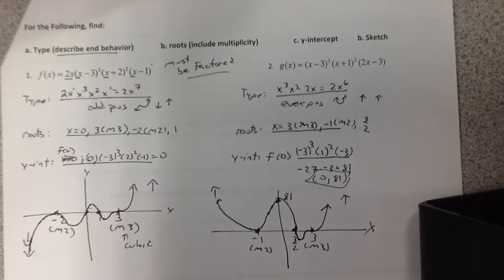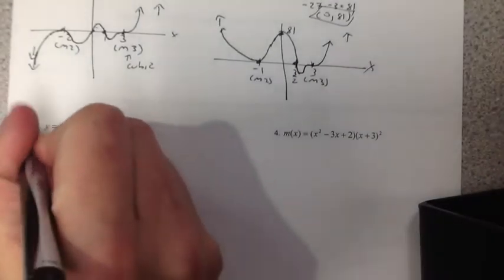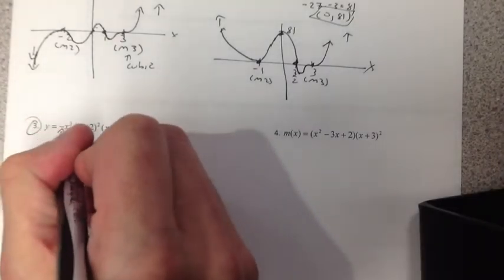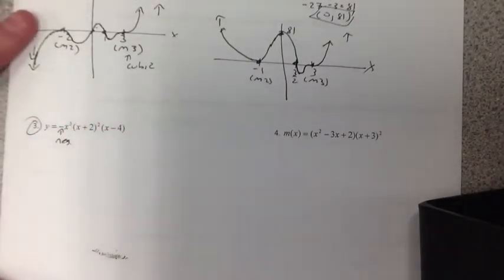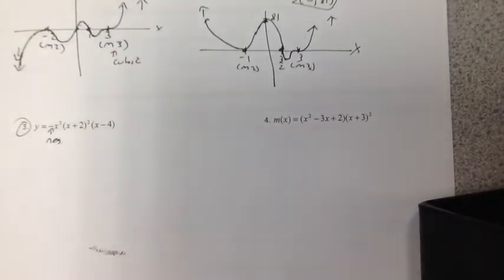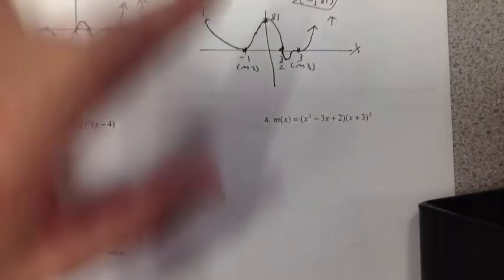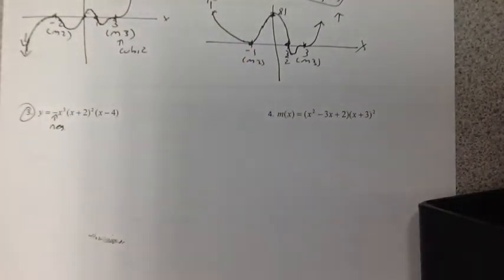Easy breezy. All right. I would like you to try number 3 at home tonight. But be careful. This is negative. It will affect our graph. Because I want to get to a problem like number 4 where we have to factor. Now, we're going to deal a lot more with factoring problems tomorrow in class. Or tonight's notes. Tomorrow night's notes. Whatever.